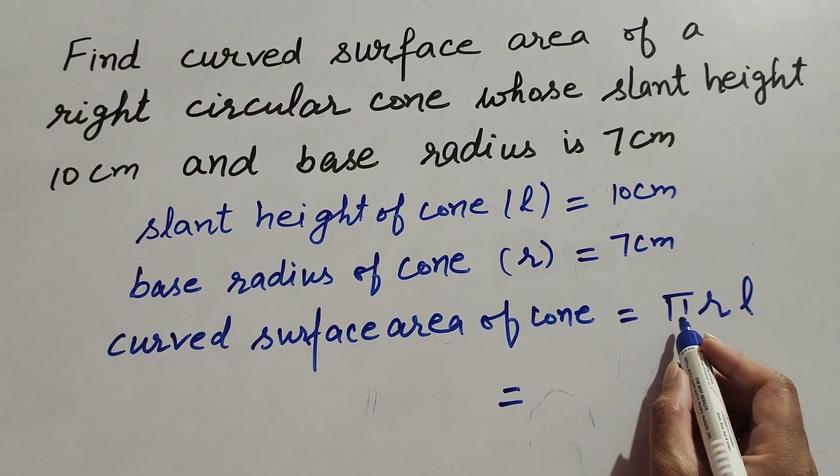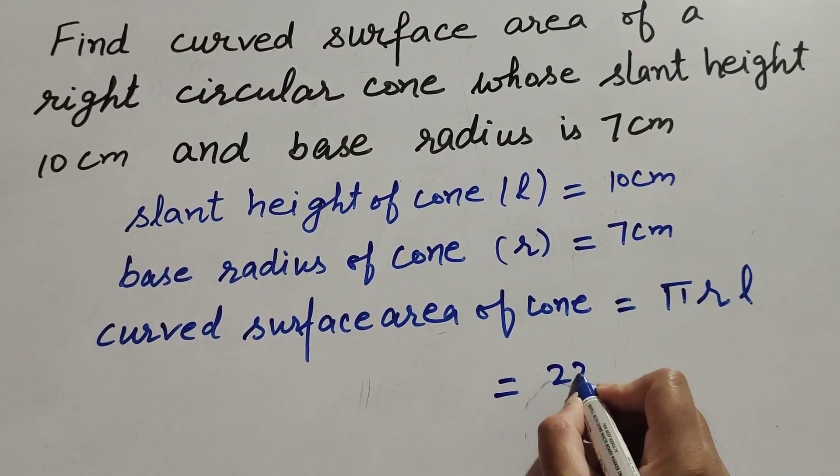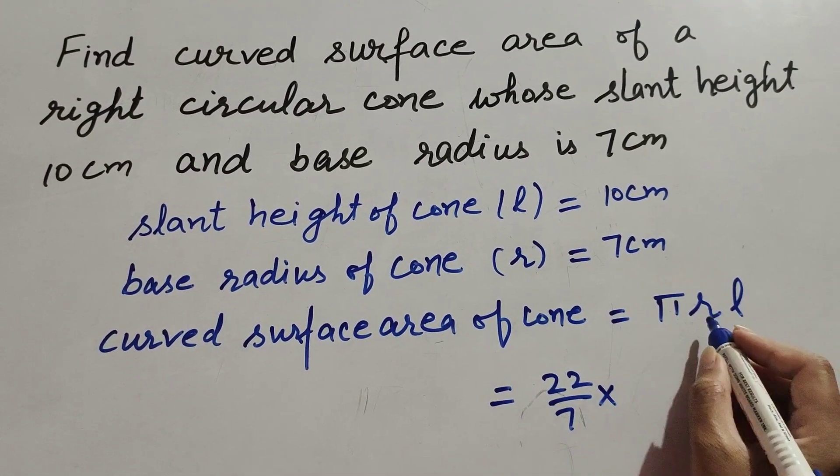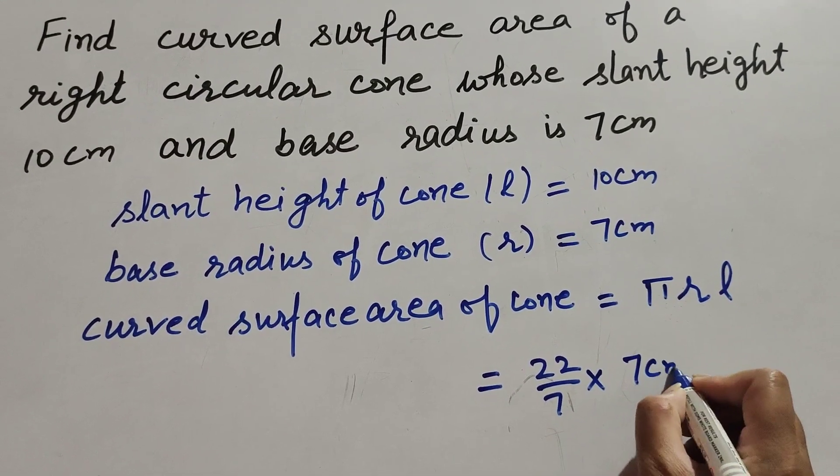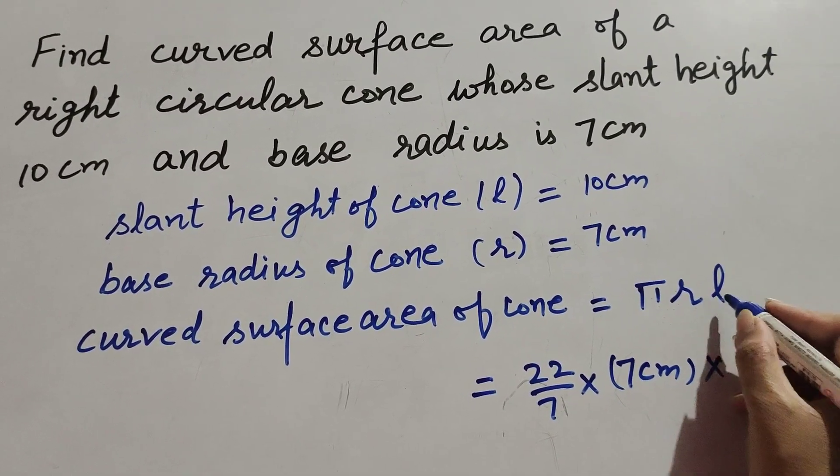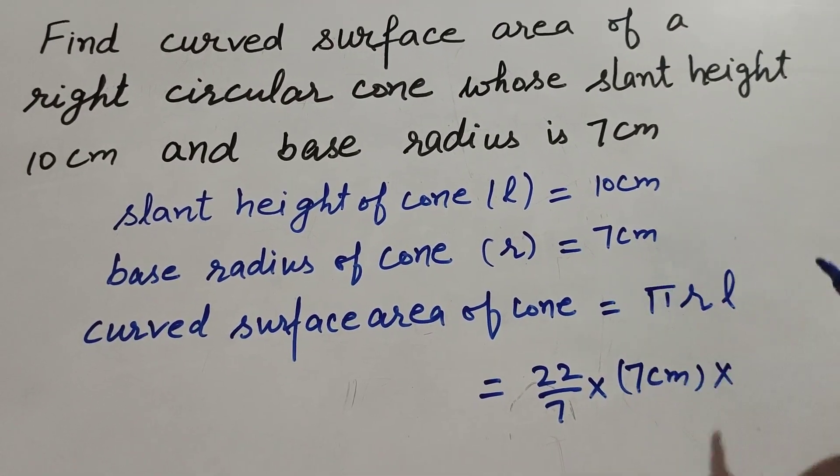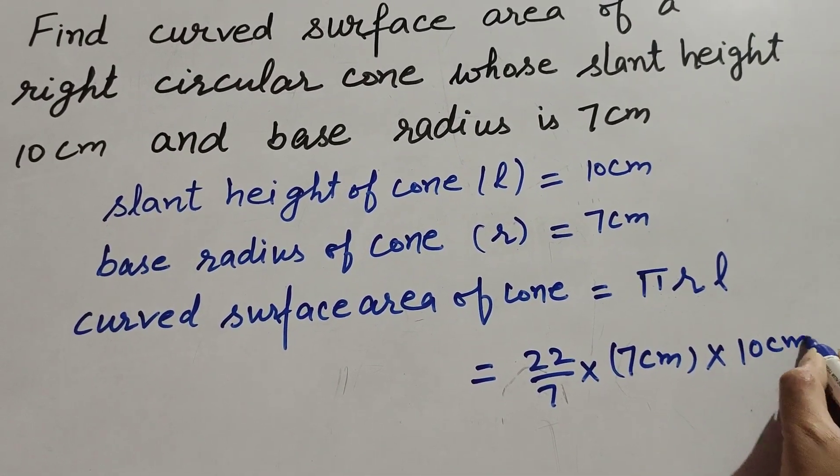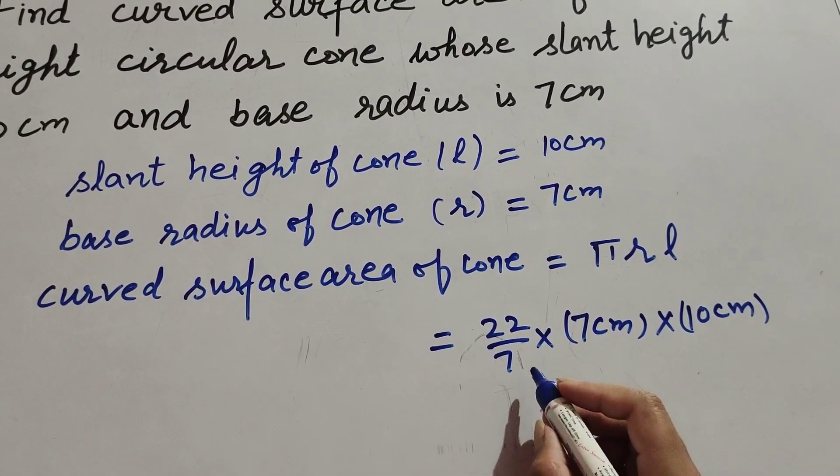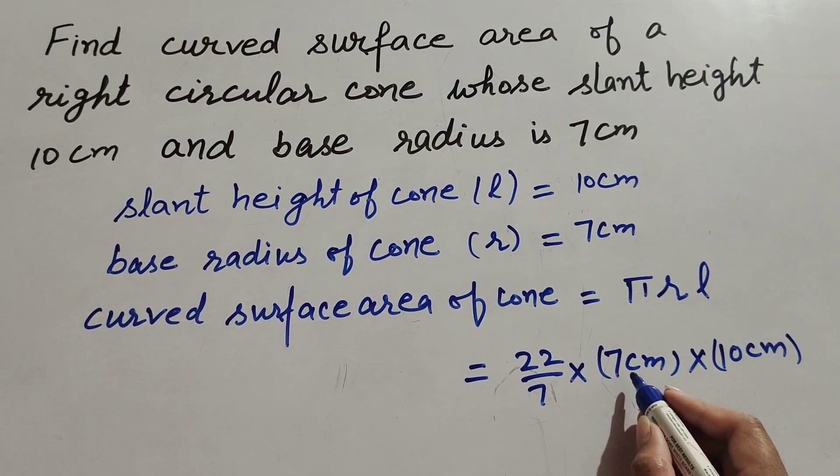In this formula, π value is constant 22 over 7, r is radius of cone which is 7 cm, and l is slant height which is 10 cm. There is 7 in denominator and 7 in numerator, both are cancelled, so we cancel them.